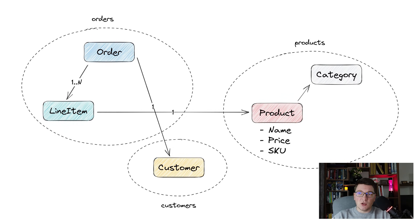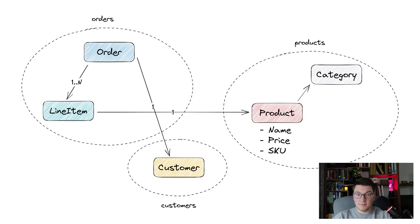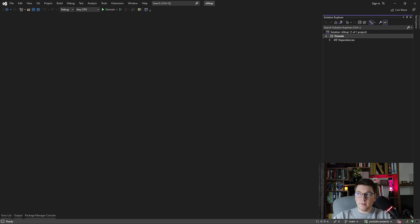Our domain is going to be an e-shop application. The aggregates are orders, products, and customers with their respective entities. We're going to convert this domain model into our project by creating classes that represent these entities, using domain-driven design principles and tactical patterns like aggregates, entities, and value objects to design our initial domain model and then impose some constraints to make it nicely encapsulated. I'm starting out from an empty solution with a domain project inside.